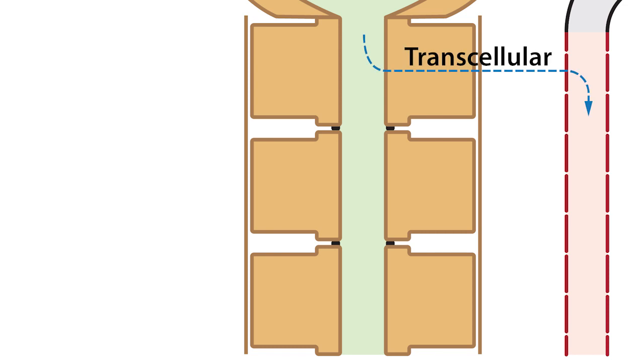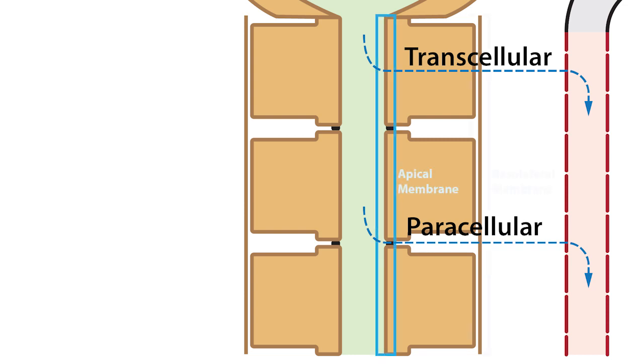transcellular, or across the cells, and paracellular, or between the cells. The transcellular pathways involve the movement across the apical and basolateral membranes, interstitial space, and finally, into the peritubular capillaries.